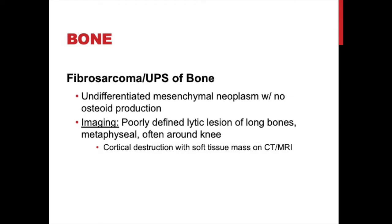The first is fibrosarcoma or undifferentiated pleomorphic sarcoma of bone. These are both undifferentiated mesenchymal neoplasms with no osteoid production that arise de novo inside of a bone. On imaging they show a poorly defined lytic lesion of the long bones, usually metaphyseal and often around the knee, mimicking osteosarcoma. They show cortical destruction with soft tissue mass extension on CT or MRI, usually eccentrically, but they lack osteoid production both histologically and radiographically.